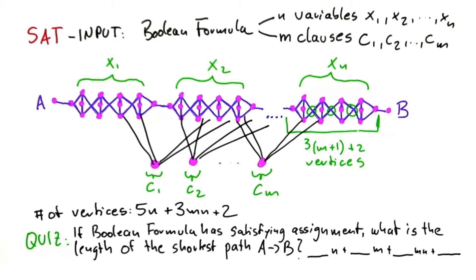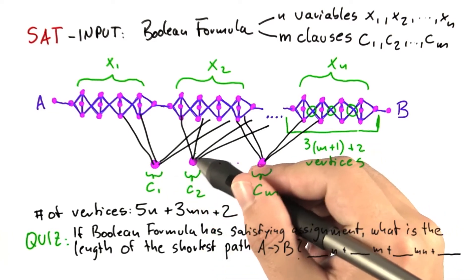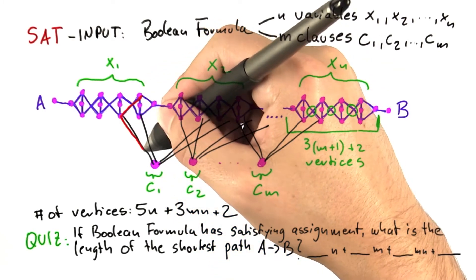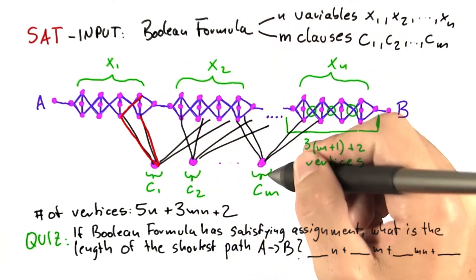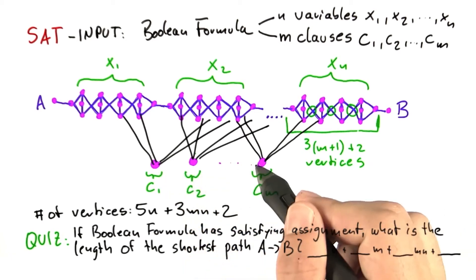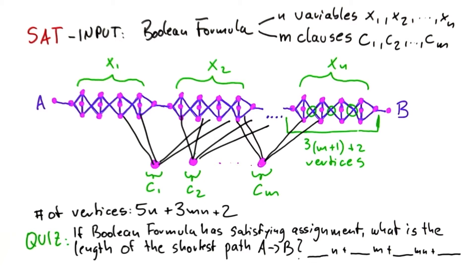The important thing to understand is that if the Boolean formula has a satisfying assignment, then a shortest path from A to B that visits all vertices can visit each of these vertices by paying just one extra edge. We have to go this way exactly once for each clause. So the length of the shortest path from A to B that visits all vertices is the same as the shortest path from A to B that does not visit the clause vertices, plus M, because we have to pay one extra edge for each clause vertex we visit.